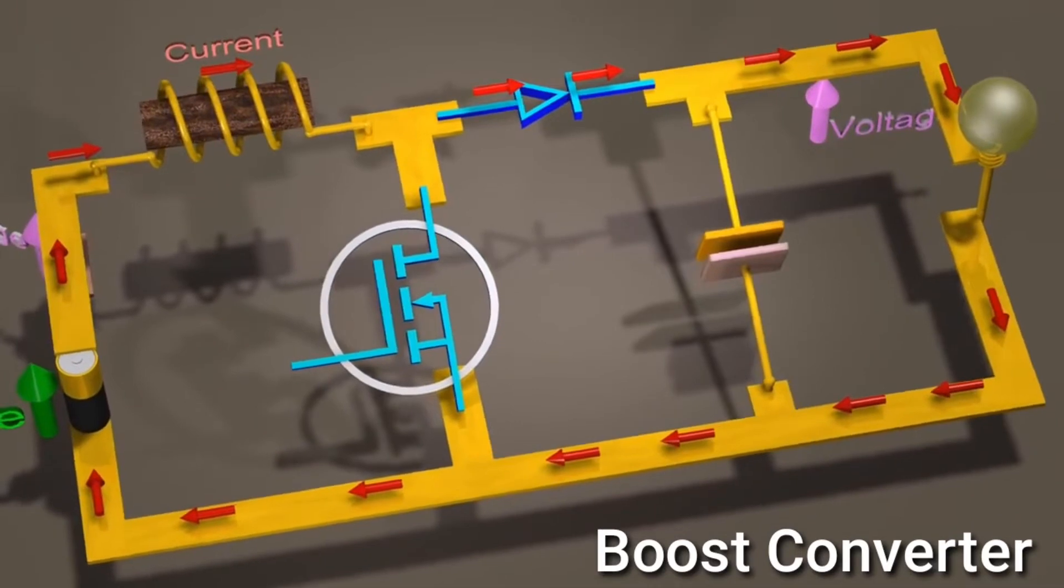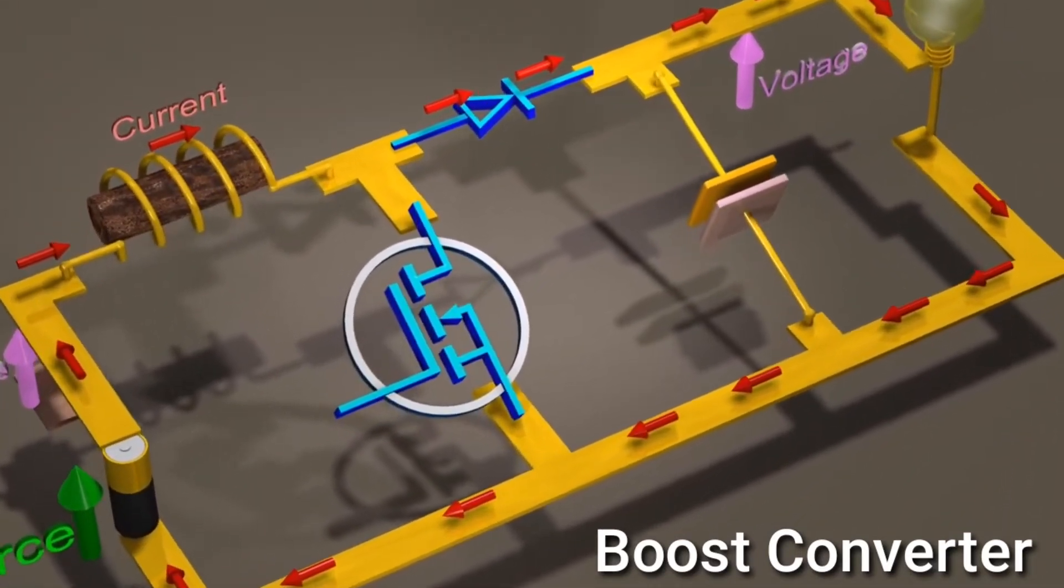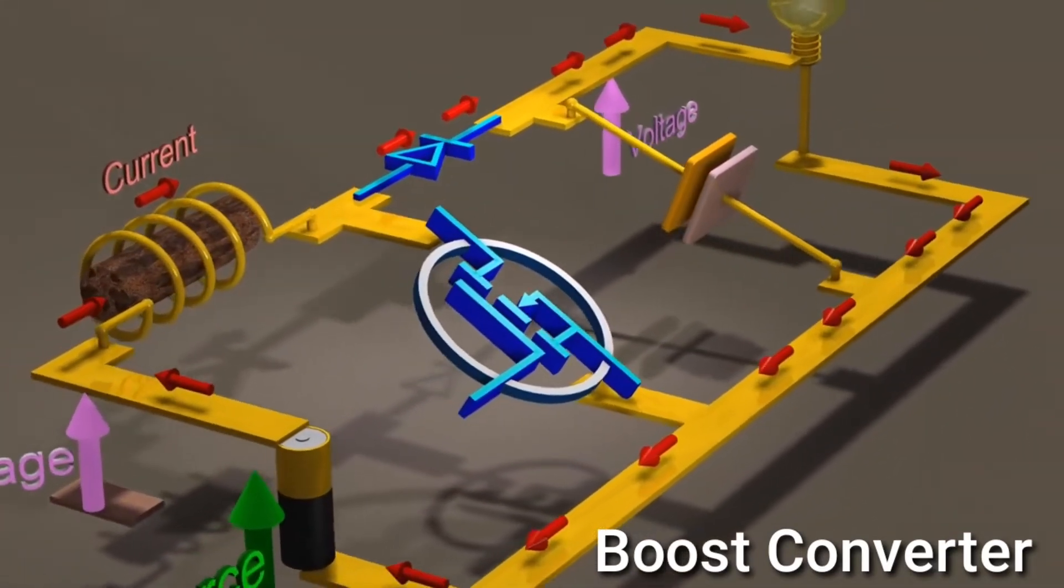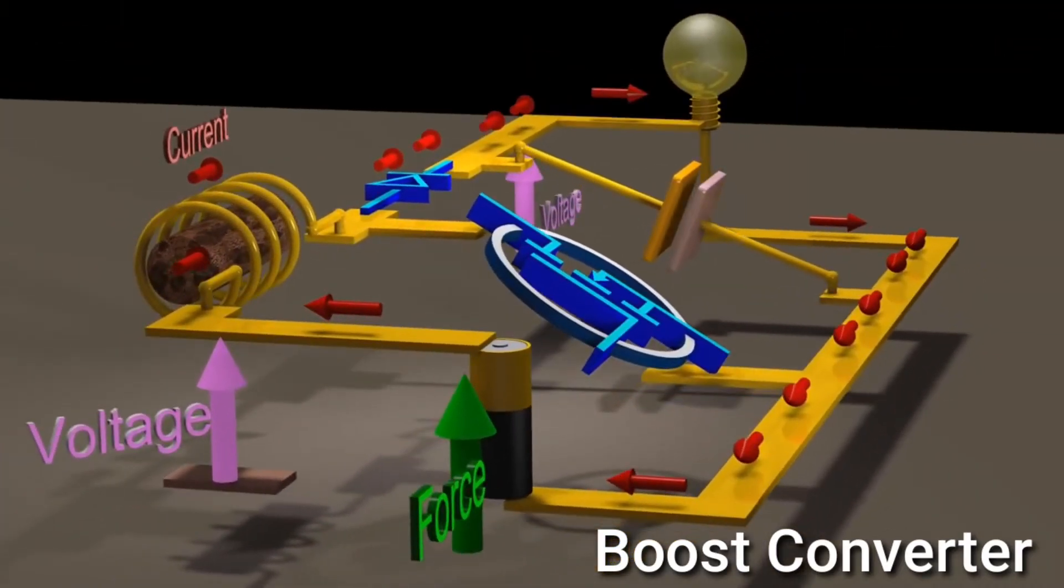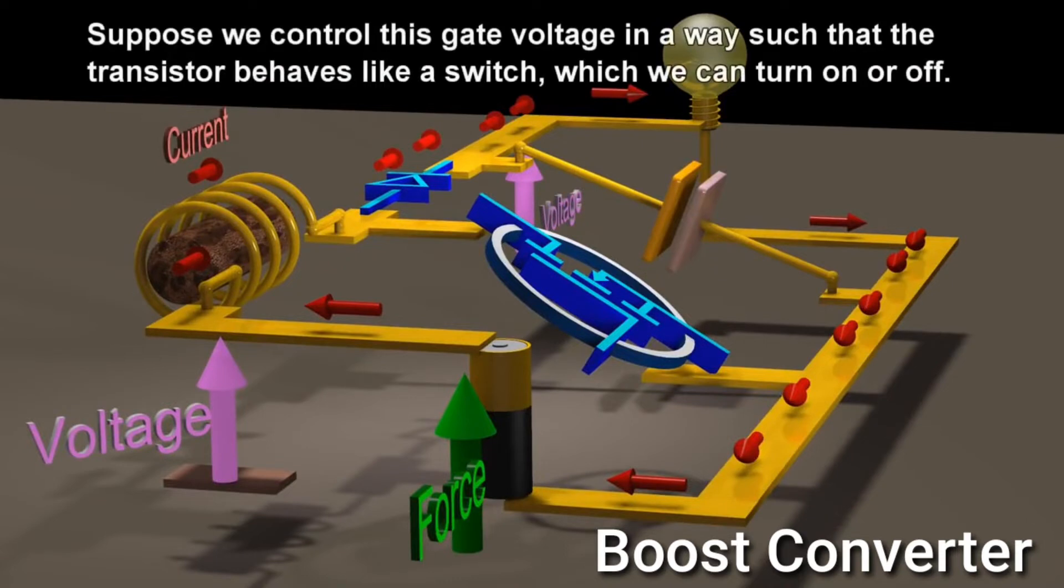The connection to the gate of the transistor is not shown, but this is a voltage that we control. Suppose we control this gate voltage in a way such that the transistor behaves like a switch, which we can turn on or off.